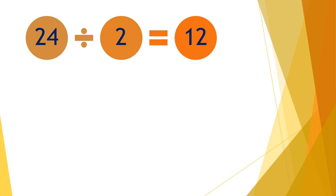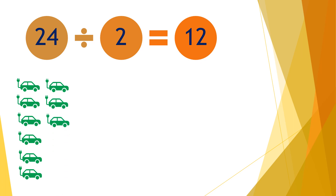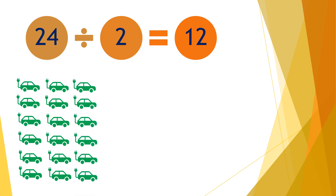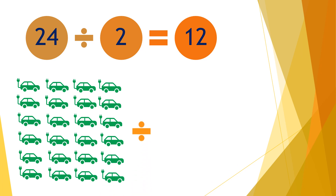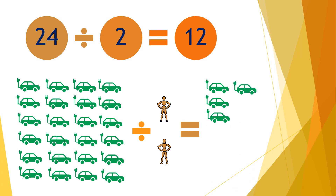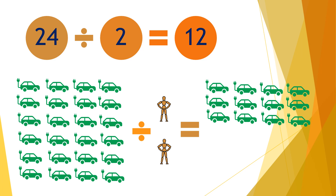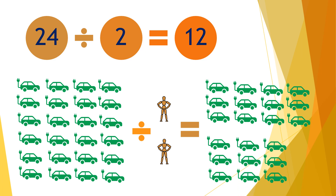Moving on to the next question: twenty-four divided by two equals twelve. So if you have twenty-four cards and divide them by two people, each person will receive twelve cards — one through twelve for each person.